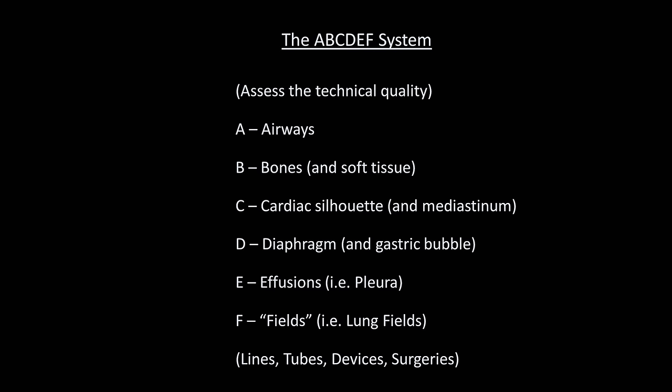Aside from the fact that it's easy to remember, another nice thing about this mnemonic is that the lungs are examined near the end. This is a good idea because normally the lungs are the area of greatest interest and the most likely to be abnormal. Therefore, once the clinician finds an abnormality there, it's very easy to forget examining the rest of the film. I've seen more than one rib fracture missed due to distraction over acute lung pathology.